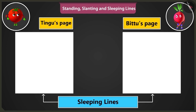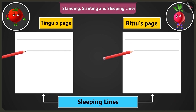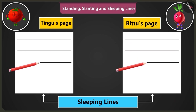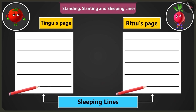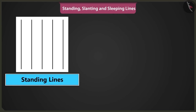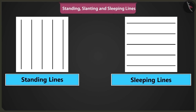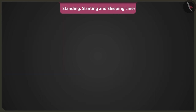Now we have to practice making the sleeping lines from the right side of the page to the left. So we will start from the right side of the page and move towards the left. Bittu, keep this in mind that the standing and sleeping lines are called straight lines. Yes, I will remember that.